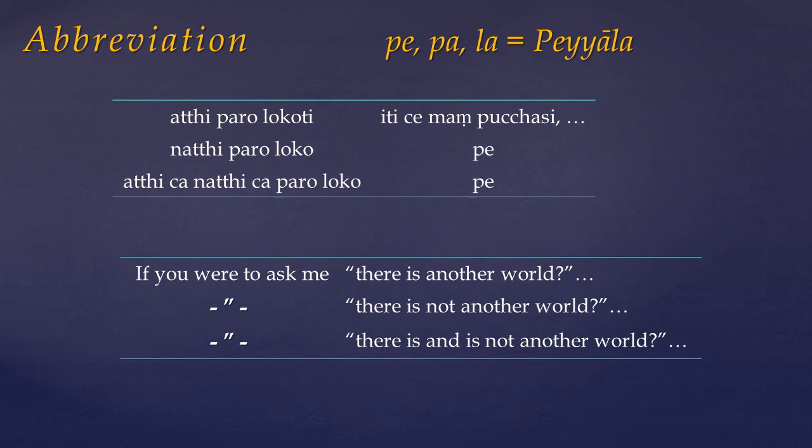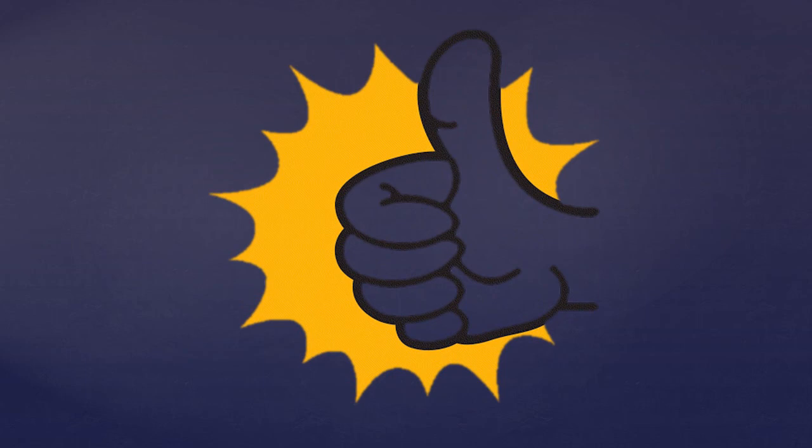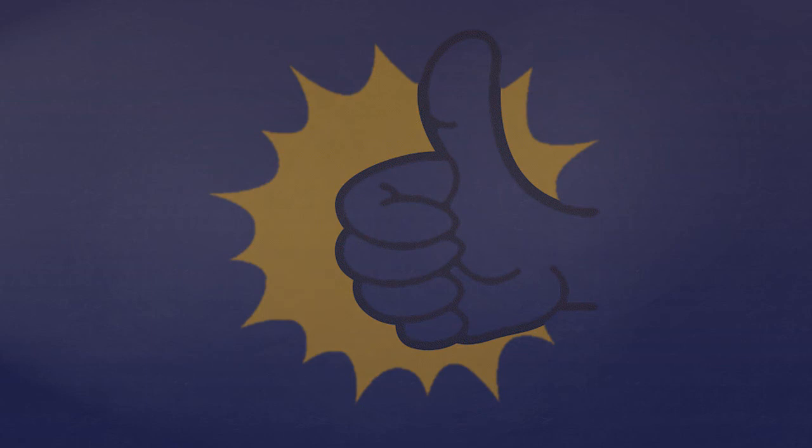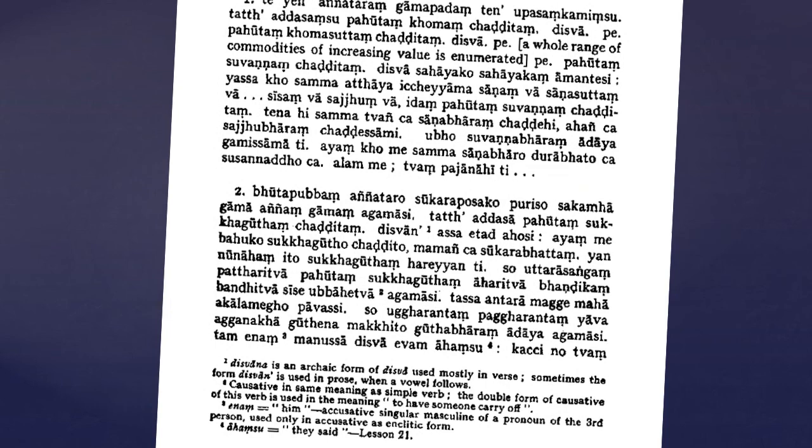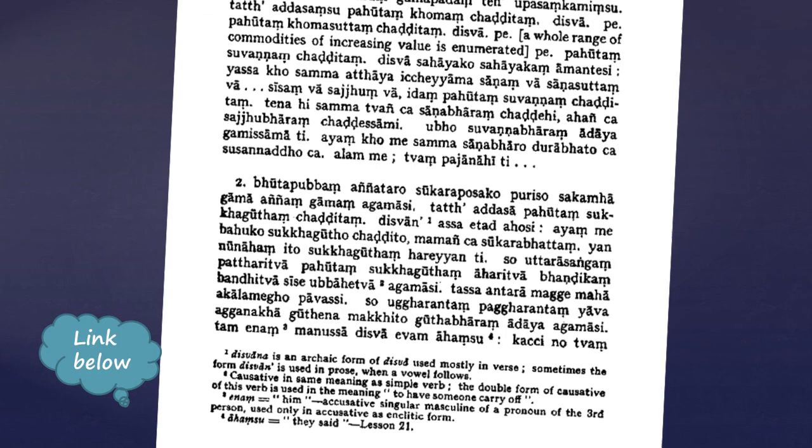Well, that was lesson 16. Congratulations for making it this far! Lesson 16 of Warder's Guide has been the point where we've covered the majority of the groundwork. So well done everybody! Don't forget to have a go at exercise 16. There are still answers available on the Wisdom and Wonders webpage to exercise 15, and a link to this is down in the description below. In next week's lesson, we'll review the declension patterns we've seen so far, and also look at numbers. In the meantime, enjoy some more tutorials!